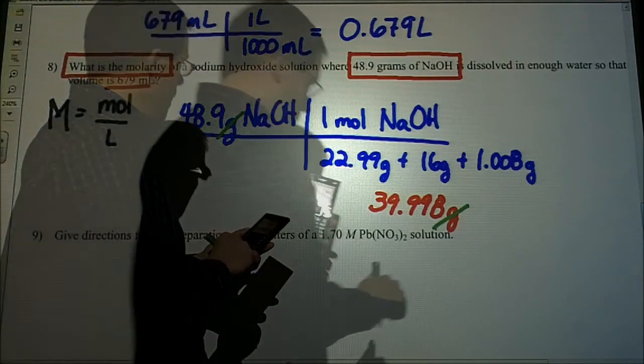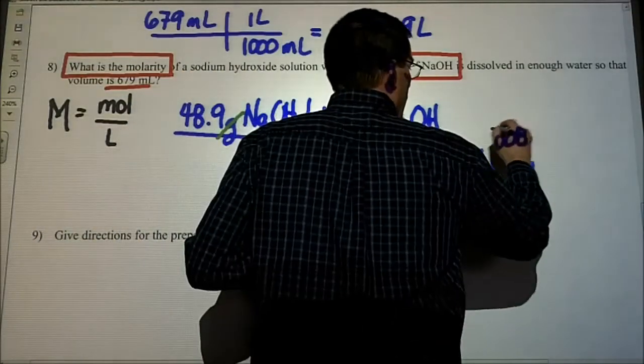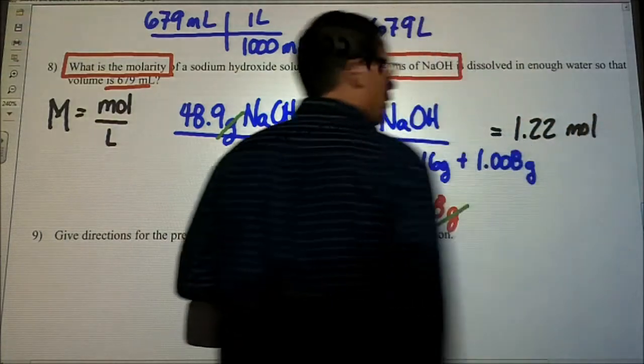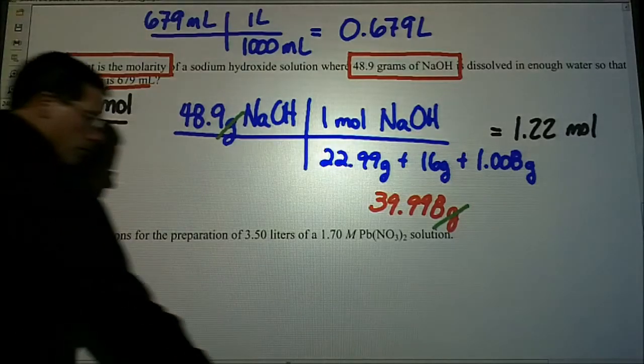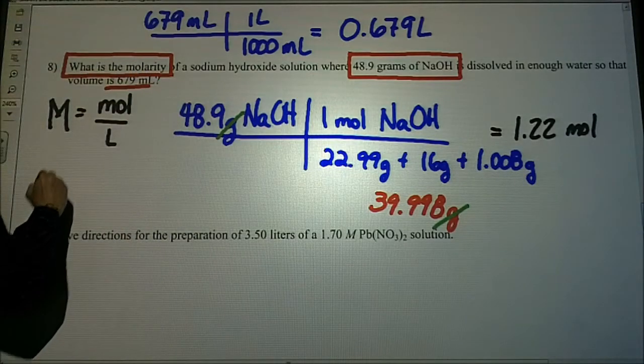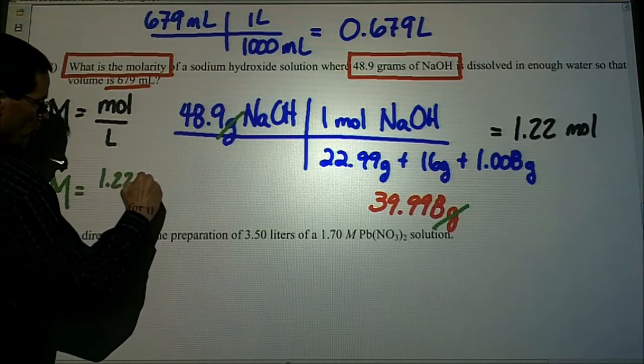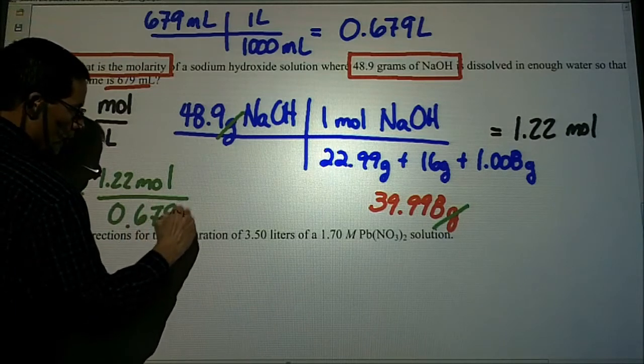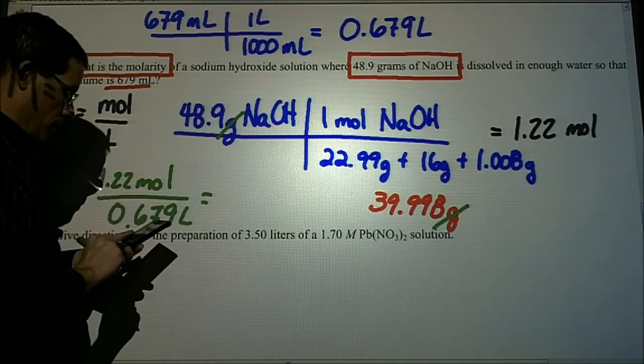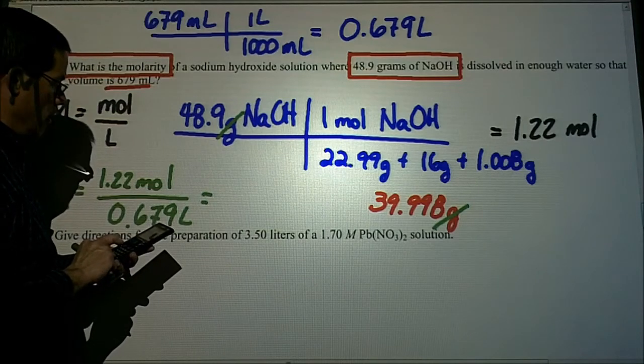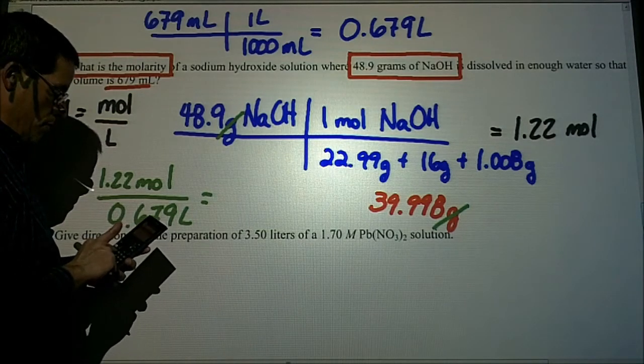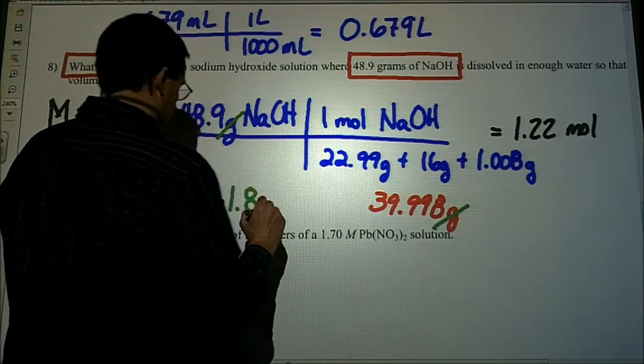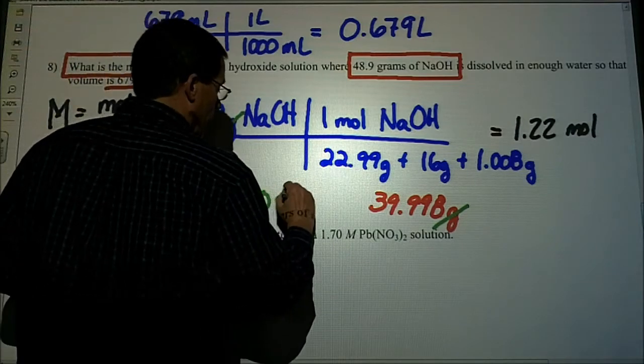We have our 48.9, that gives us 1.22 moles. So we have our mole amount. Plug it into our equation. Our molarity: 1.22 moles. And our total volume we said was 0.679 liters. Take your answer, divide it, and we get a molarity of 1.80, and that's moles per liter.